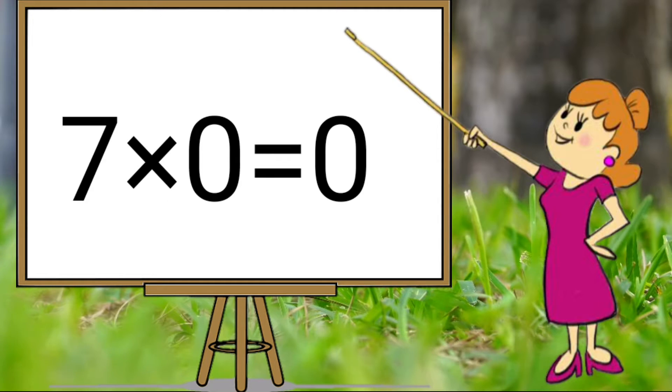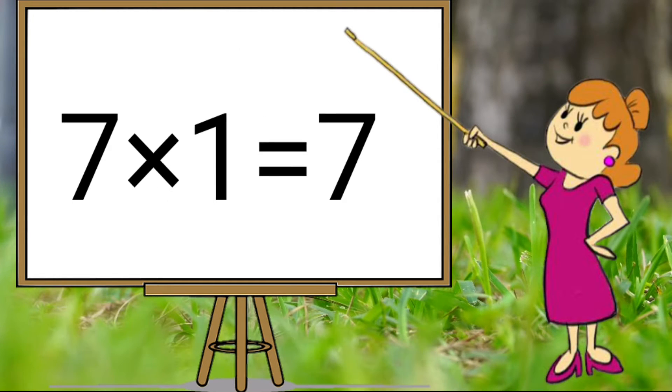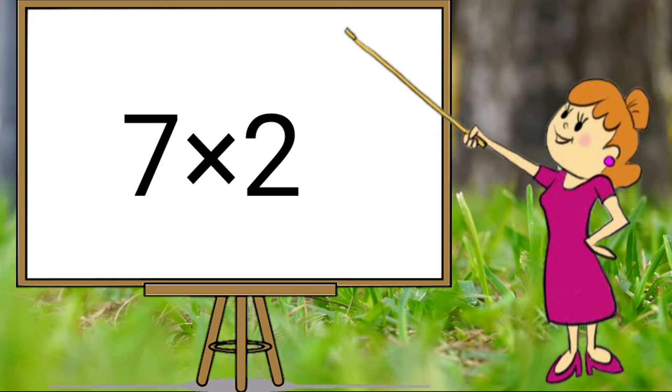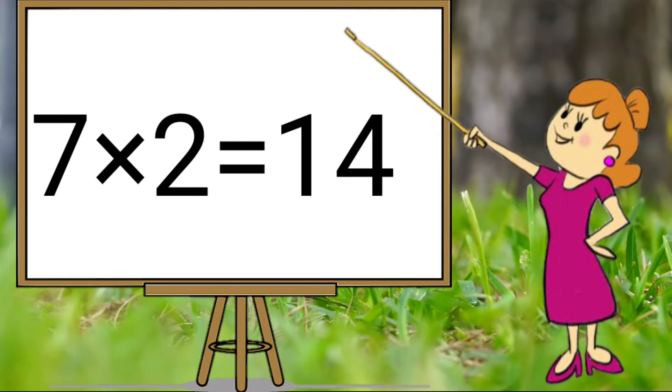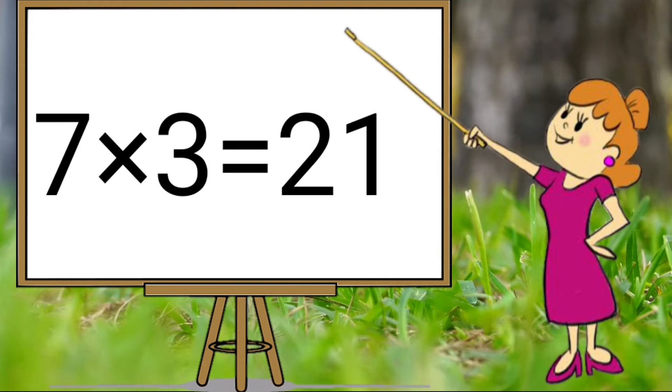7 0s are 0. 7 1s are 7. 7 2s are 14. 7 3s are 21.